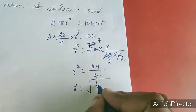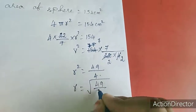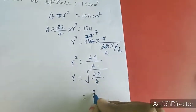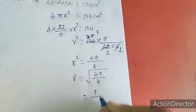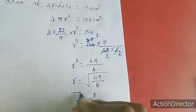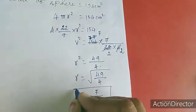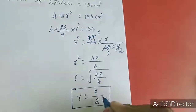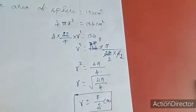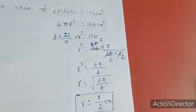Therefore r = √(49/4). The square root of 49 is 7, and the square root of 4 is 2. So the radius r = 7/2 cm. Now we will move to the next sum.